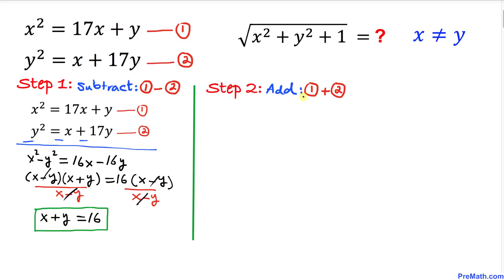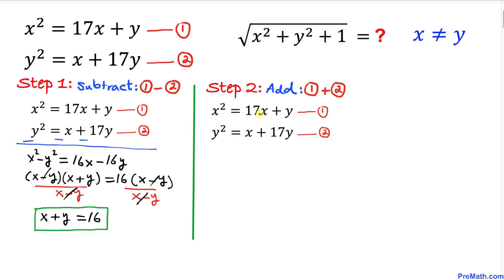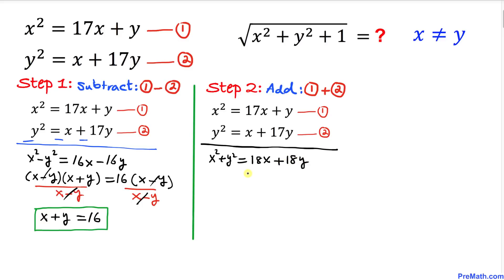Our next step is to add equations one and two. Adding them gives x² + y² on the left-hand side. On the right-hand side, 17x + x = 18x and y + 17y = 18y, so we get x² + y² = 18x + 18y.